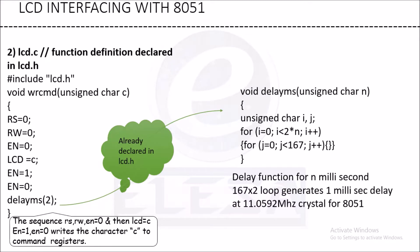The void delayms function is a delay function for n milliseconds. The loop runs 167 times multiplied by 2 for 1 millisecond. The parameter n is used for generating an n-millisecond delay, so the loop continuously revolves within that block.